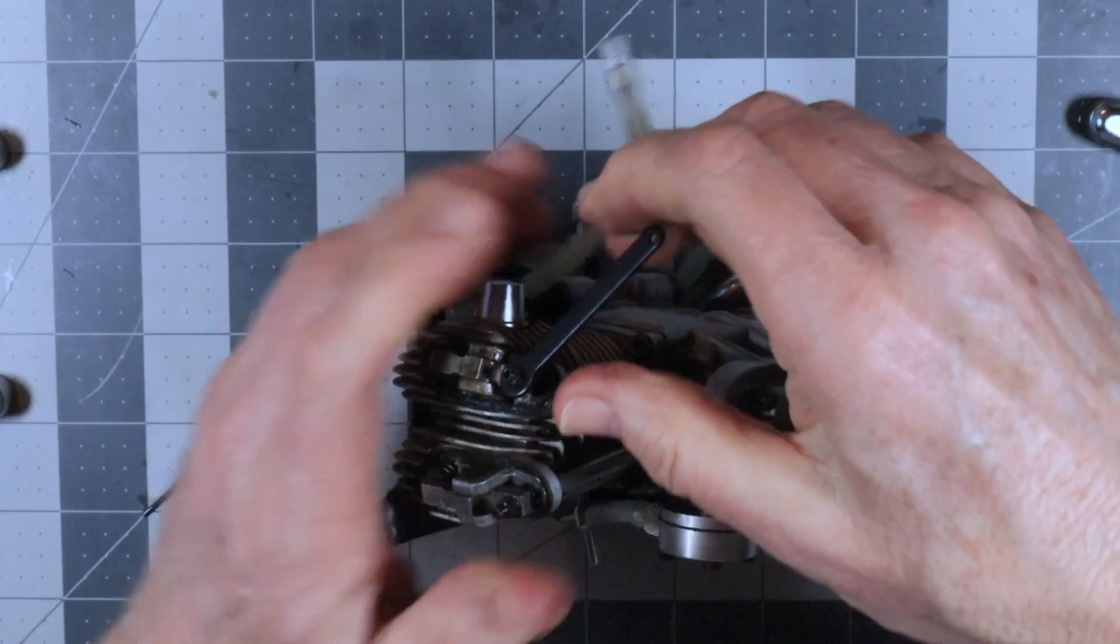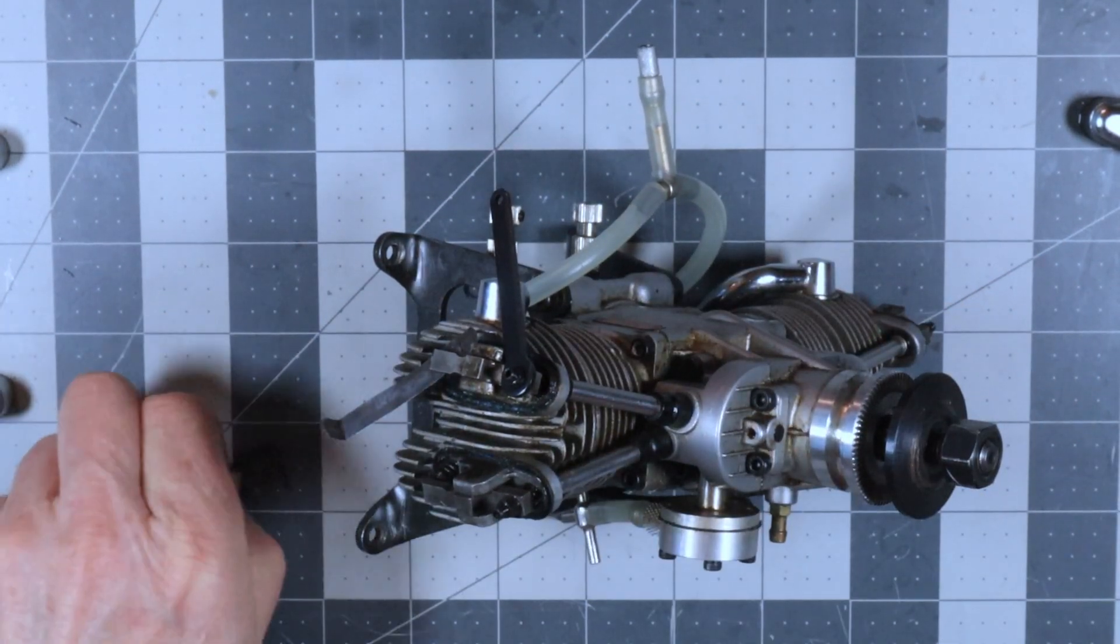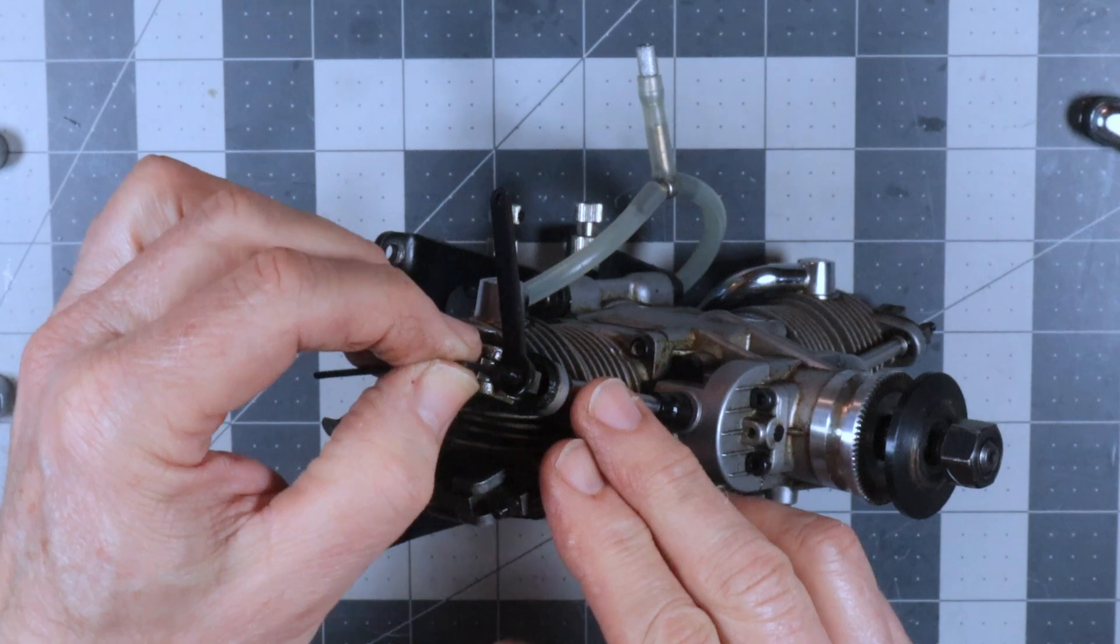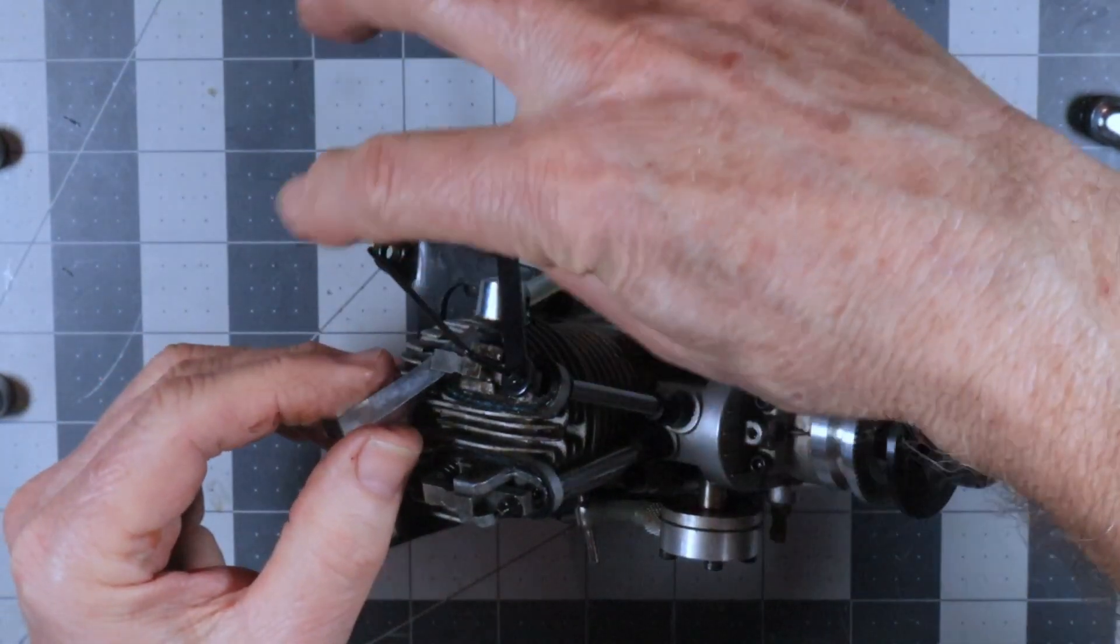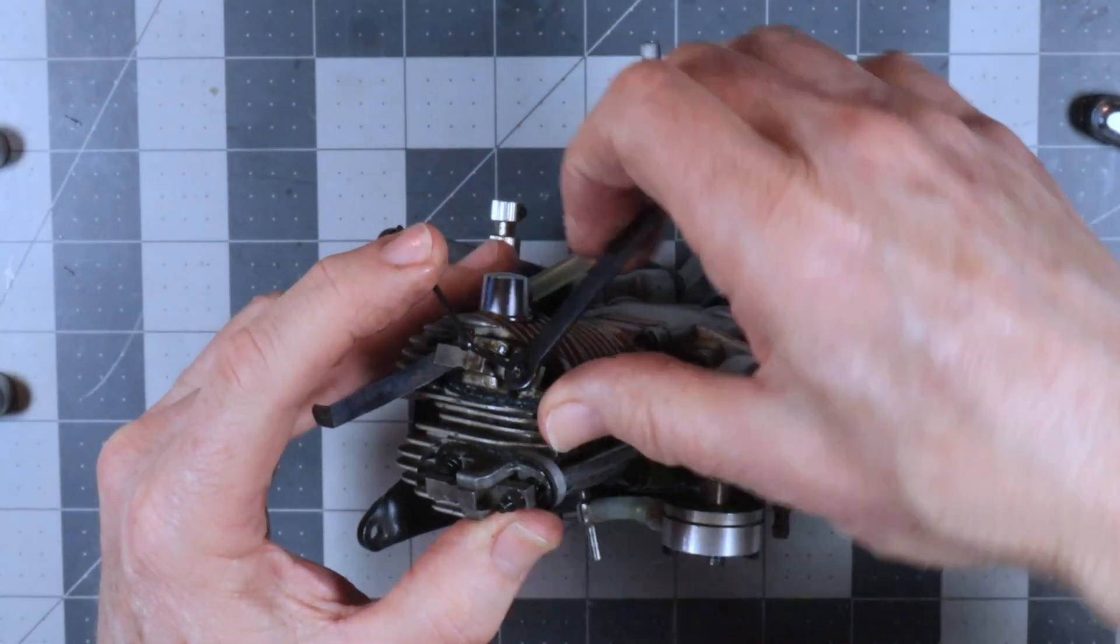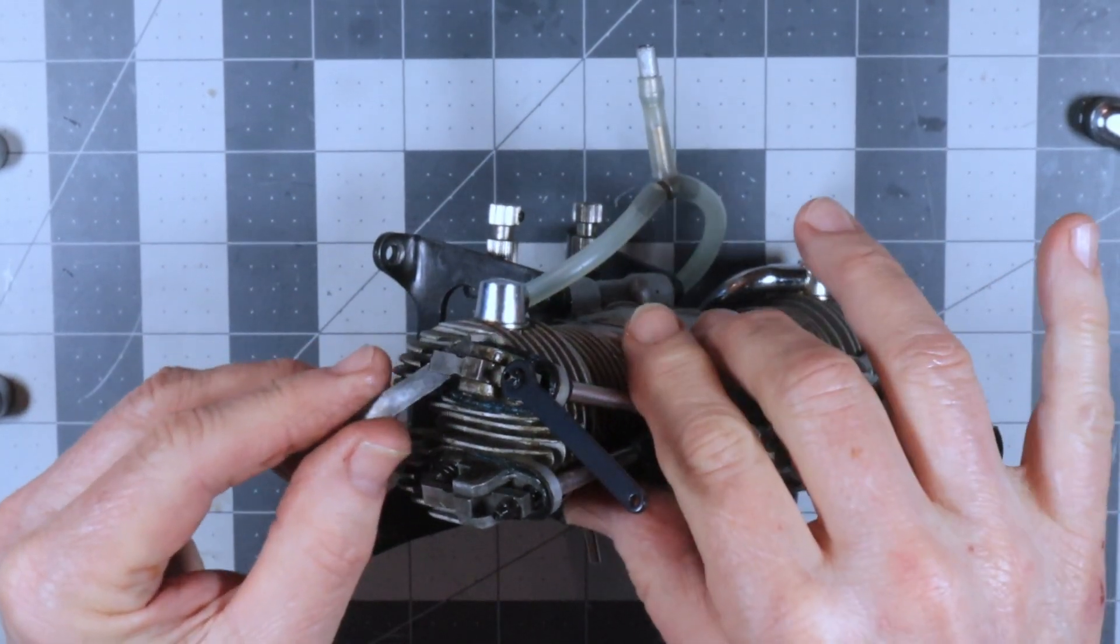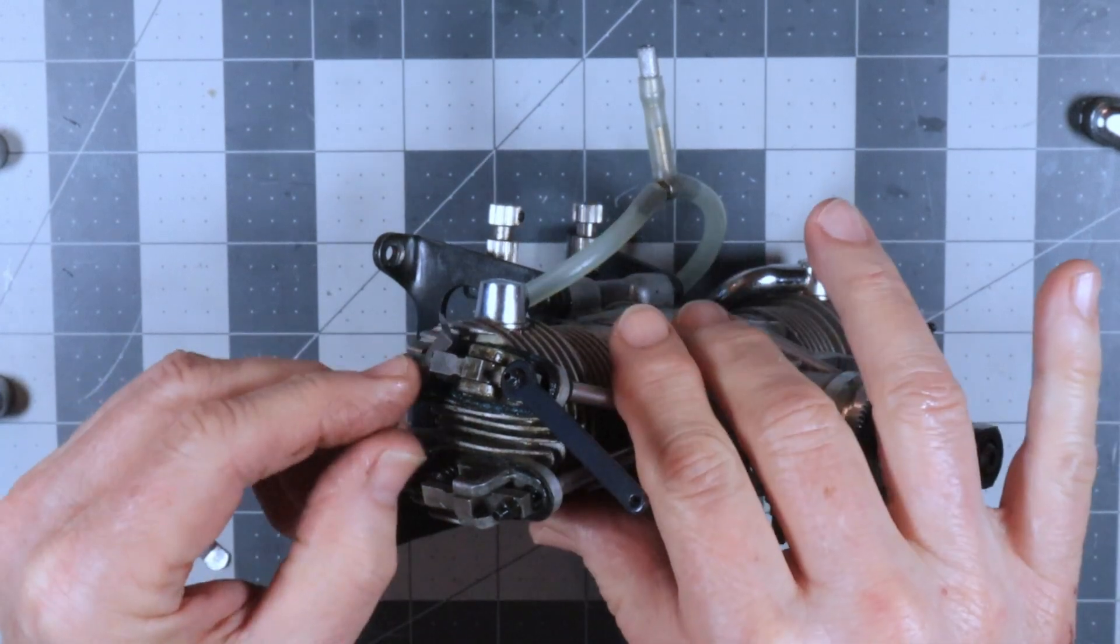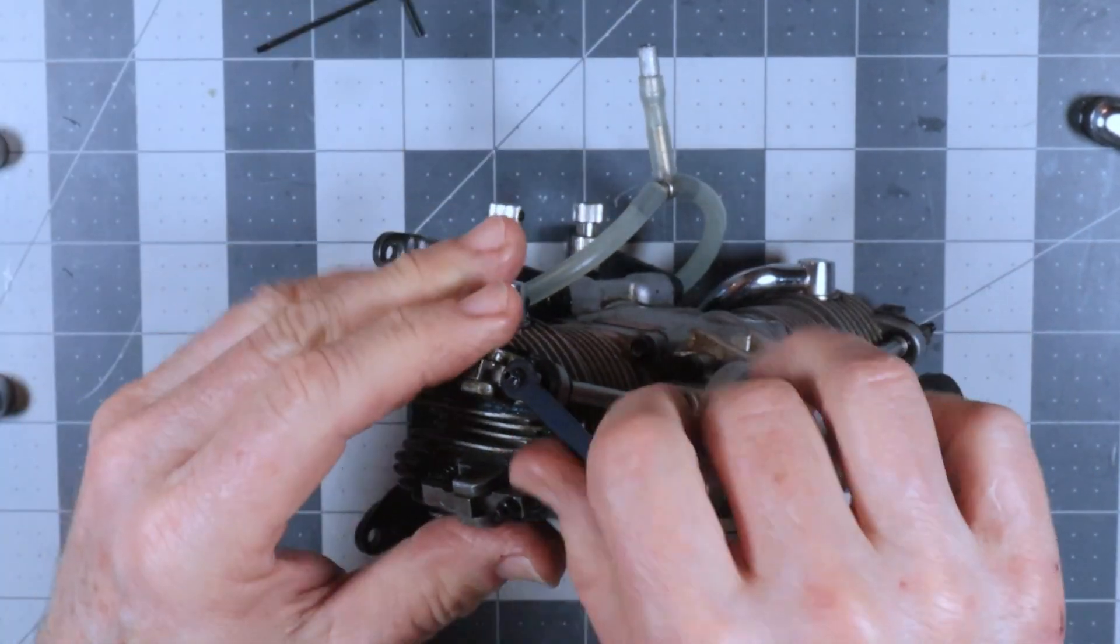So I'm going to start with the intake. Put this in here. Just tighten it until I just feel it start to nip that. Hold that now. Tighten my locking nut. See if it held that. Feels like it's just nipping it. And that one won't go in there either. So that's good.